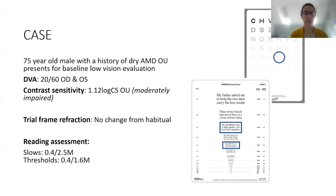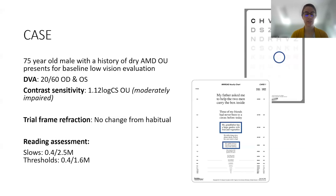On examination, the patient's distance visual acuities measure 20/60 in each eye, and his contrast sensitivity is moderately impaired at 1.12 log CS. We performed a trial frame refraction, which yielded no improvement. We then evaluated his reading using a continuous text reading card held at 40 centimeters, where he was able to read 2.5 M where he first started to slow down, and the smallest line he could read was 1.6 M.